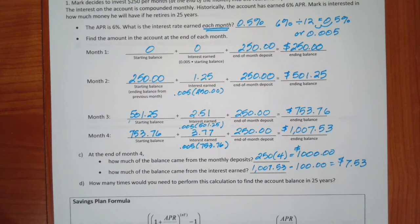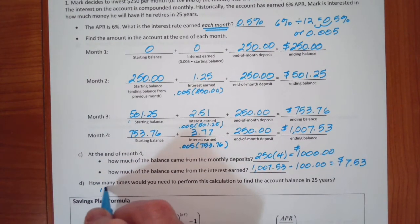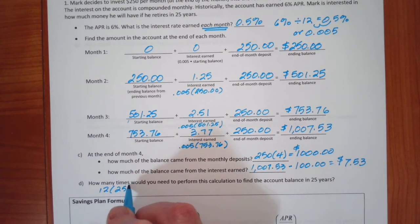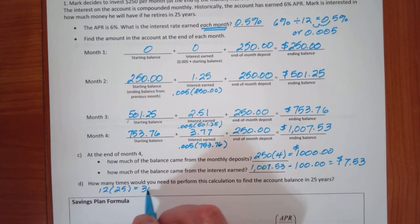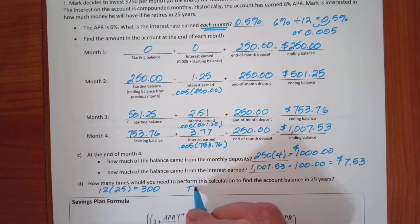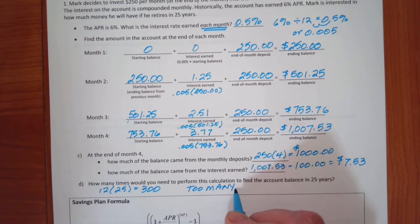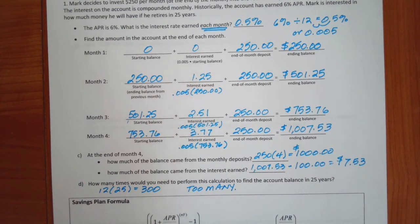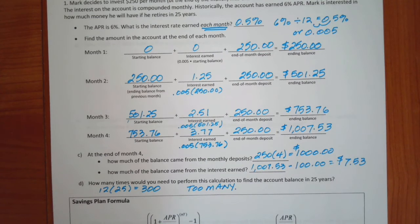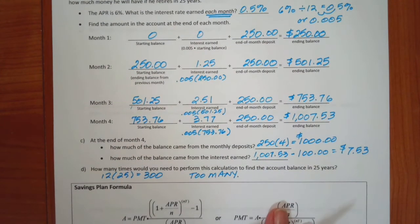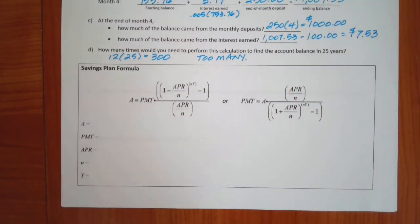Okay, so in seven minutes, we were able to do four months. But he wants to know how much will be in there if he retires in 25 years. Okay, well, we would have to do that once a month, every month for 25 years, so that would be 12 times 25, so we would have to do it 300 times. That's too many, and it takes too long. Okay, so we can do it a lot more reasonably if we use the savings plan formula.